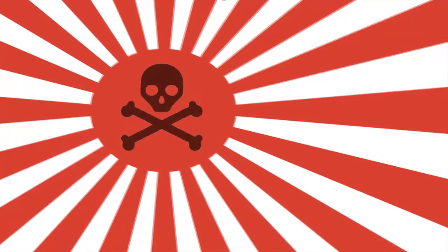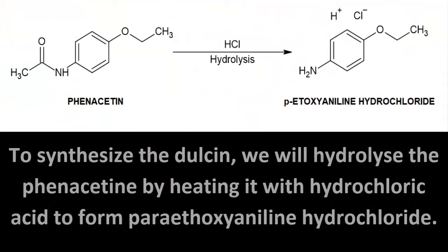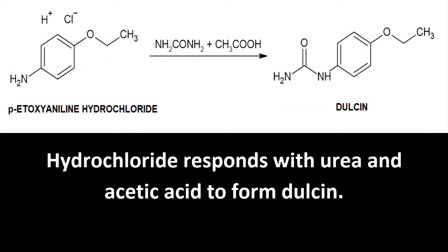In Japan there have been many poisonings by dulcin and it was banned in the year 1969. To synthesize the dulcin, we will hydrolyze the phenacetin by heating it with hydrochloric acid to form p-ethoxyaniline hydrochloride. The hydrochloride reacts with urea and acetic acid to form dulcin.